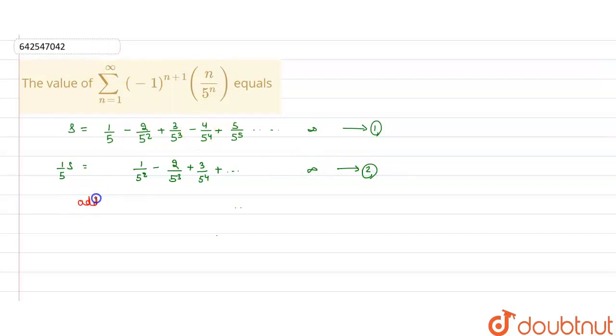Now, add the first and second equations. We will get 6S by 5. This will be 1 by 5 minus 1 by 5 square plus 1 by 5 cube minus 1 by 5 to the power 4, up to infinity.